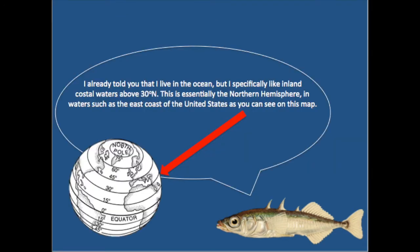I already told you that I live in the ocean, but I specifically like inland coastal waters above 30 degrees north. This is essentially the northern hemisphere, in waters such as the east coast of the United States, as you can see on this map.